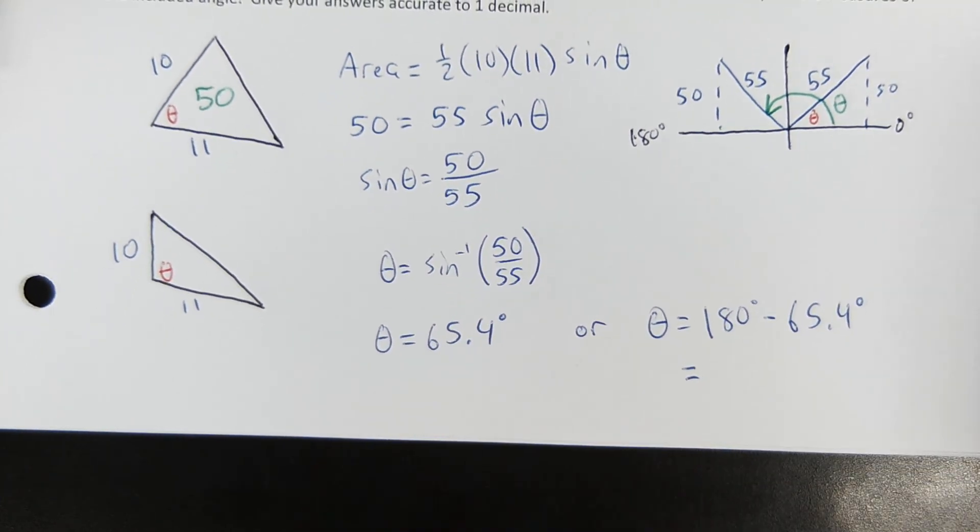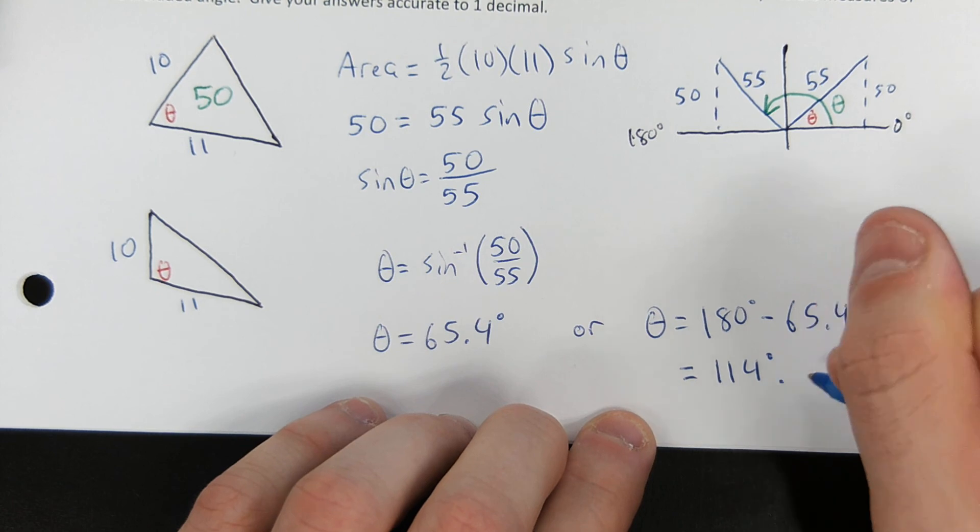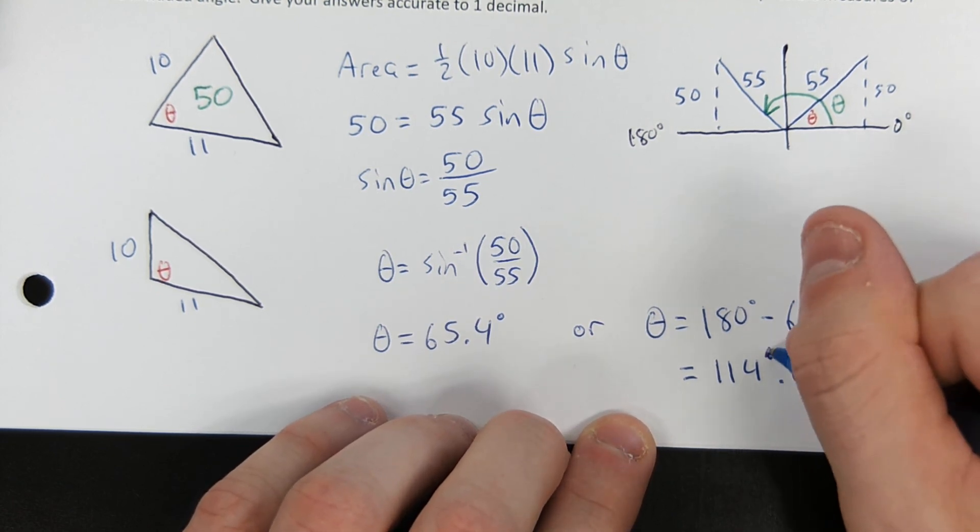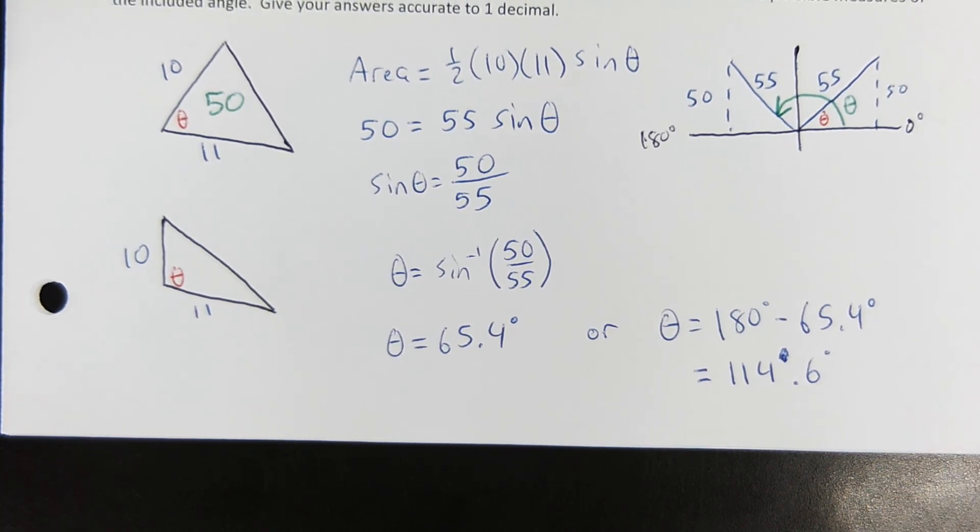So your answers are 65.4 or 114.6 degrees. Now I will go ahead and tell you that the test questions will not say determine the two possible measures. It will say determine the measure, and then in parentheses, an S, implying there could be one or there could be more. And it's on the student to know when it's possible to have one or two.